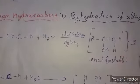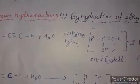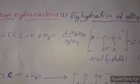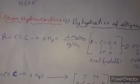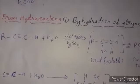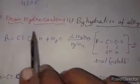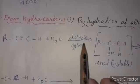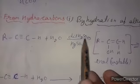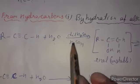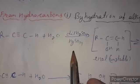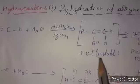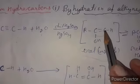Next, we prepare aldehydes and ketones from hydrocarbons — first by hydration of alkynes. When we add water to an alkyne in the presence of dilute sulfuric acid and mercury sulfate catalyst, an unstable intermediate called an enol forms — a compound with a double bond and an OH group.